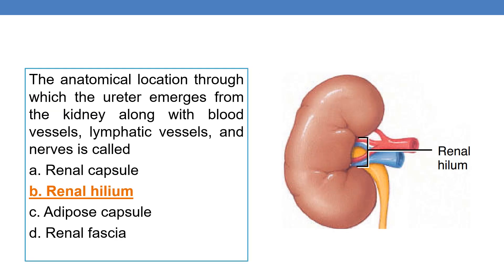Next question: the anatomical location through which the ureter emerges from the kidney, along with the blood vessels, lymphatic vessels and nerves, is called the renal hilum. Renal hilum is the anatomical location through which the ureter and blood vessels pass. This area is called the renal hilum.